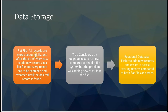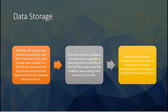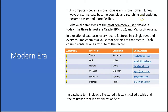To summarize: flat files stored records sequentially — easy to add records, but every record had to be searched sequentially, which was time consuming. The tree or hierarchical database improved data retrieval but made adding new records difficult. As computers became more popular, relational databases were developed, which are easy to add new records and easy to access existing records. Relational databases are the most commonly used today; the three largest providers are Oracle, IBM, and Microsoft Access.